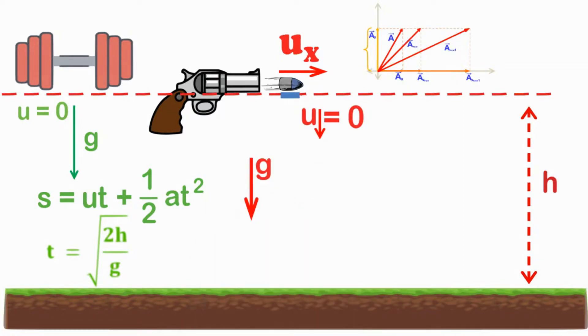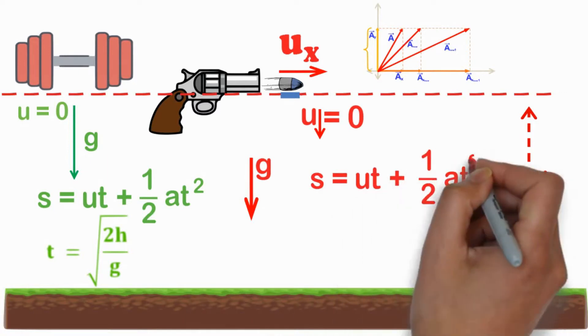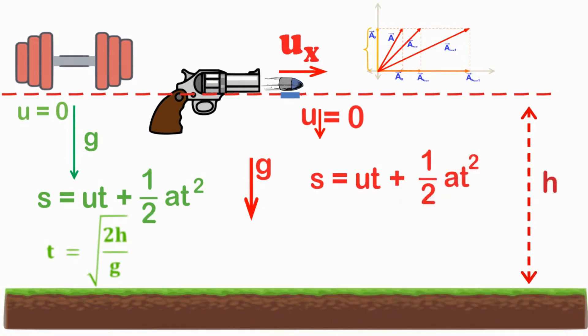it will remain the same. So we can use the same kinematical equation to calculate the time taken by the bullet to reach the ground. Again, it is t = √(2h/g).